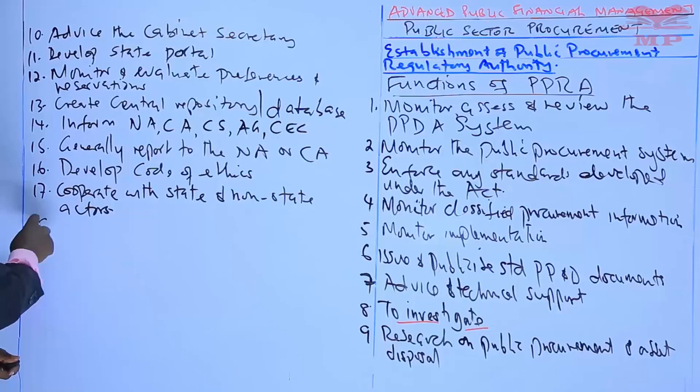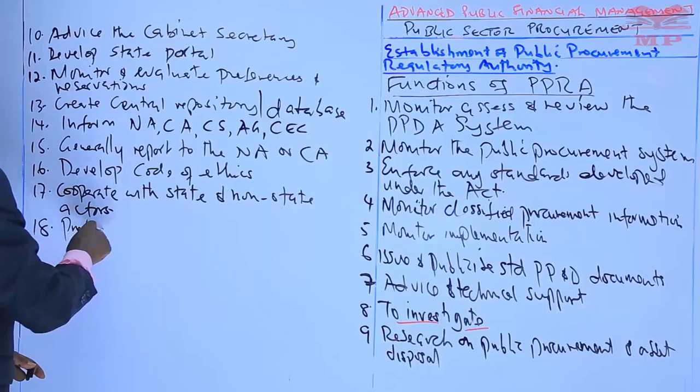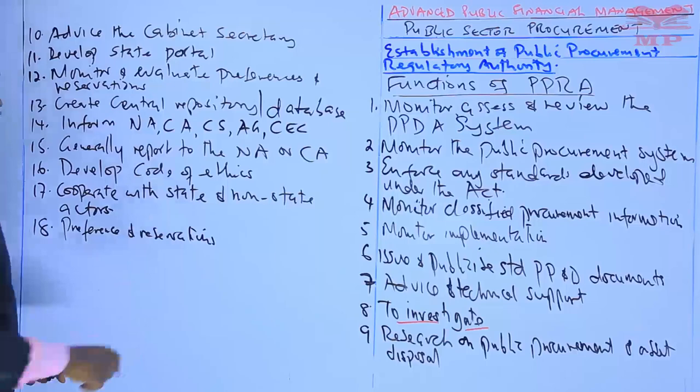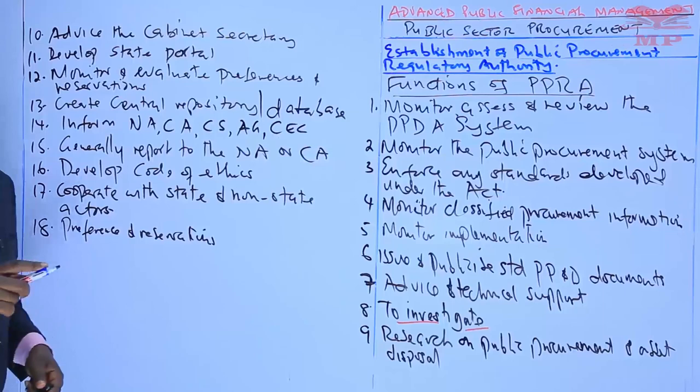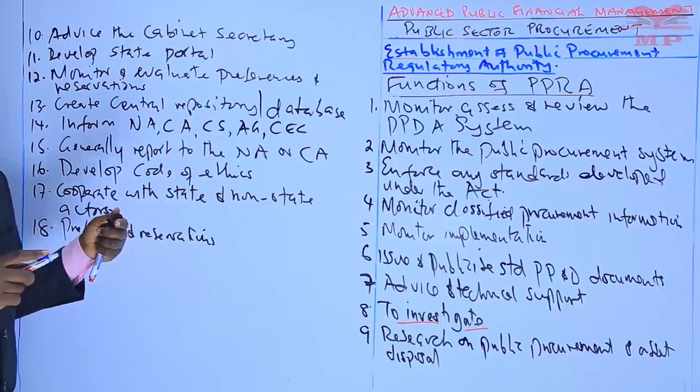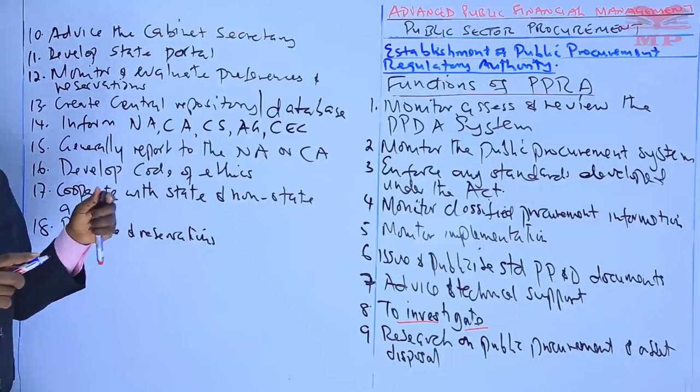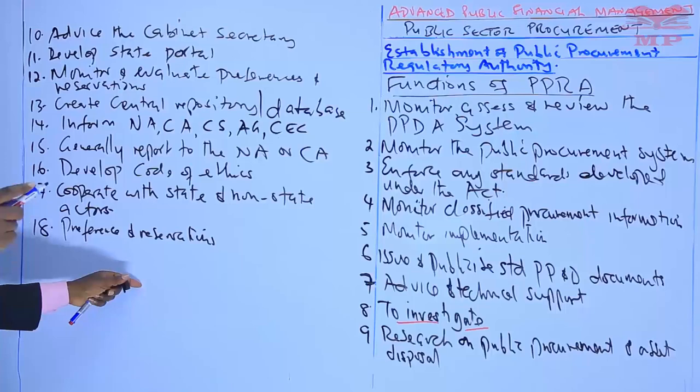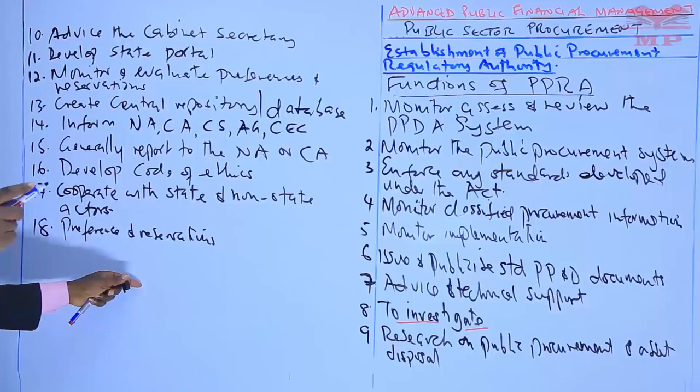Function eighteen relates to preferences and reservations. The PPRA ensures that procuring entities implement preference and reservation schemes and provide data to the authority, disaggregated to indicate the number of disadvantaged groups that have benefited. These are the 18 functions of the PPRA.